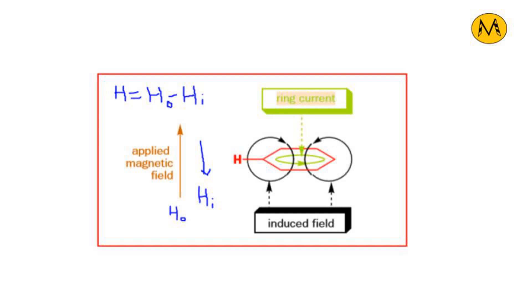Have a look at the molecule. The magnetic field that is produced because of delocalization is in the same direction as the applied field when it is outside the ring — both pointing in the upward direction.